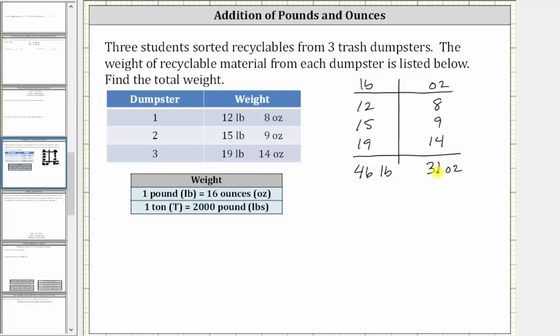But again, since the number of ounces is 16 or more, we have to convert the ounces to pounds and ounces. Let's write this total weight as 46 pounds plus 31 ounces.